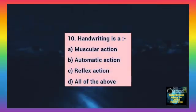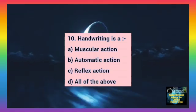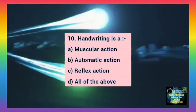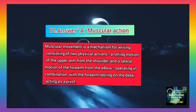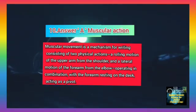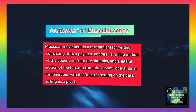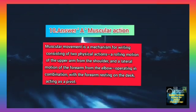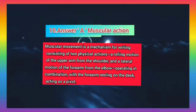Question number 10. Handwriting is — Option A: Muscular action. Option B: Automatic action. Option C: Reflex action. Option D: All of the above. The correct answer is A, muscular action. Muscular movement is the mechanism for writing, consisting of two physical actions: a rolling motion of the upper arm from the shoulder and a lateral motion of the forearm from the elbow, operating in combination with the forearm resting on the desk, acting as a pivot.